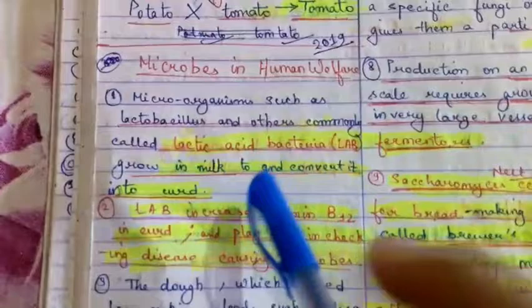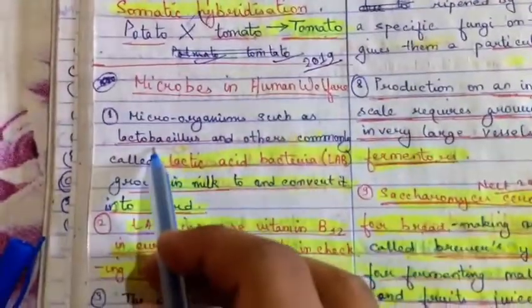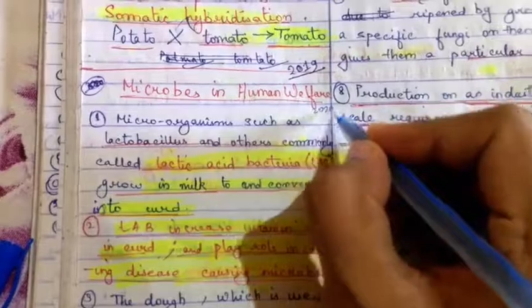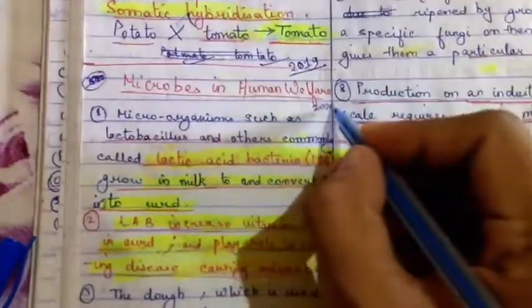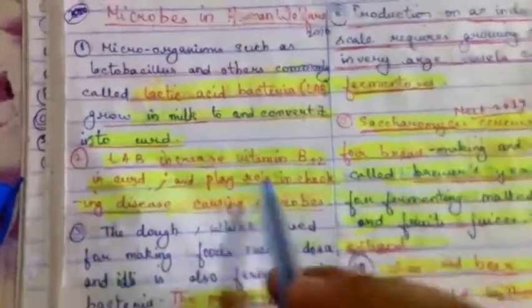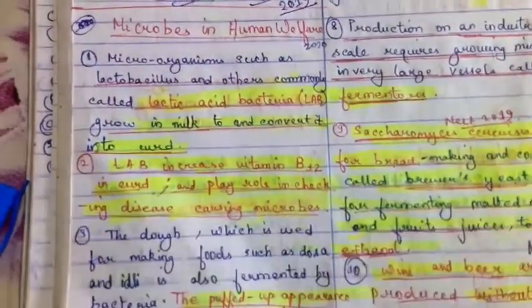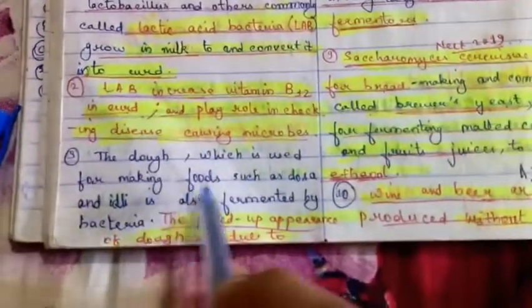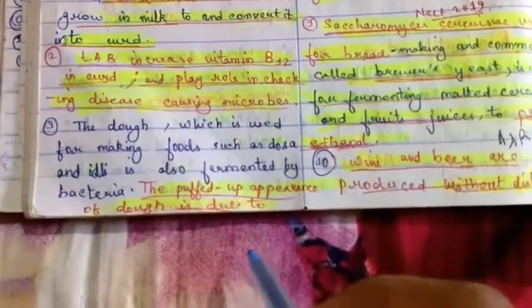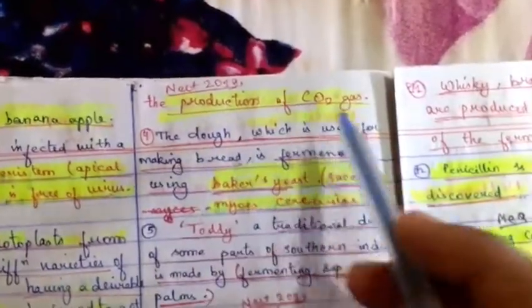Microorganisms such as Lactobacillus and other lactic acid bacteria (LAB) — NEET 2020 — grow in milk to convert it into curd. LAB increase vitamin B12 in curd and play a role in checking disease-causing microbes. LAB is also used for making food such as dosa and idli, which are fermented by bacteria. The puffed appearance of dough is due to the production of CO2 gas.